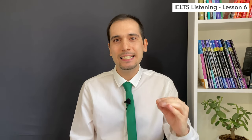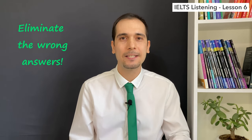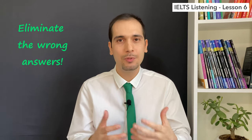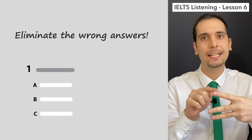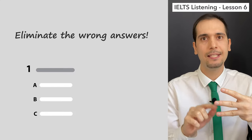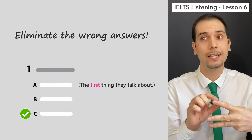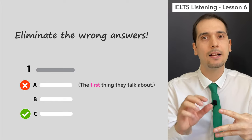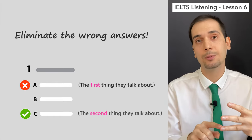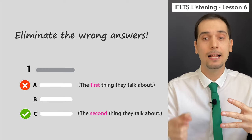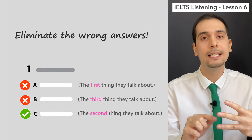The best technique and strategy you can use is to eliminate the wrong answers. For example, imagine A, B, C and C is the correct answer. They start talking about A — but A is not the correct answer, so you eliminate it. Then they move to C, which is the correct answer, and you choose it. Then they even talk about B, and you eliminate that too, making sure that C is correct.